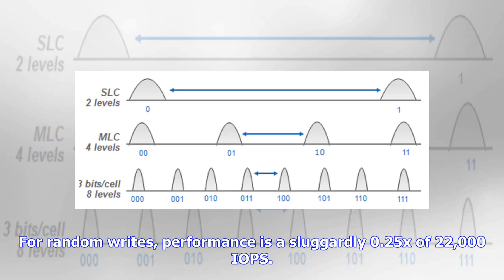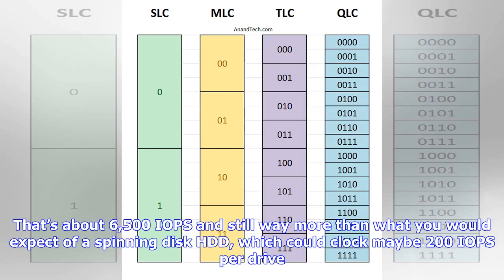For random writes, performance is a sluggardly 0.25x of 22,000 IOPS — that's about 6,500 IOPS, and still way more than what you would expect of a spinning disc HDD, which could clock maybe 200 IOPS per drive.